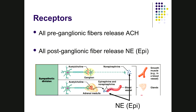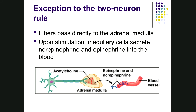In the sympathetic system there are two neurotransmitters: pre-ganglionic fibers release acetylcholine, and post-ganglionic fibers release norepinephrine and a small amount of epinephrine. The exception remains the adrenal medulla, where pre-ganglionic fibers go directly, stimulating release of epinephrine and norepinephrine into the bloodstream as neurohormones, allowing the sympathetic system to affect organs with no direct nerve connection.